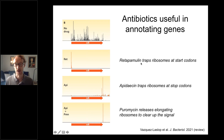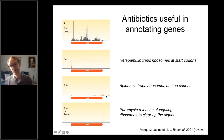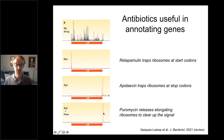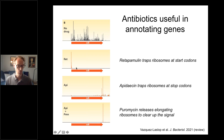The Mankin lab also uses another antibiotic called apidacin, which traps ribosomes at stop codons. Other ribosomes pile up behind them and some frameshift and read into the 3' UTR, making the data noisy. The Mankin lab found that treating with puromycin releases elongating ribosomes while apidacin-trapped ones remain stuck, allowing clean annotation of stop codons. These tools are helpful for figuring out which open reading frame ribosome profiling reads come from and annotating all start and stop sites.